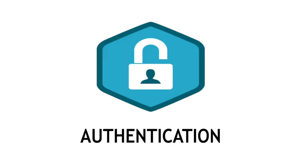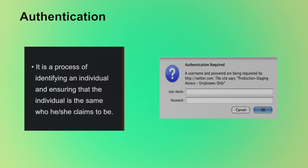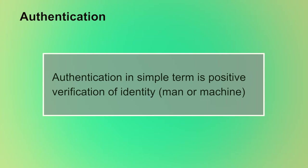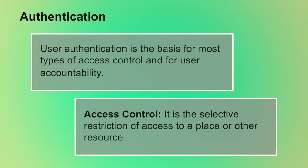The first cyber security technique is authentication. Authentication is a process of identifying an individual and ensuring that the individual is the same who he or she claims to be. It is the process of ascertaining claimed user identity by verifying user-provided evidence. For example, a username is required to identify who you are, and the password is required to ensure you are the authentic user. Authentication in simple terms is positive verification of identity, either man or machine. In most computer security concepts, user authentication is the fundamental building block and the primary line of defense, and the basis for most types of access control and user accountability.